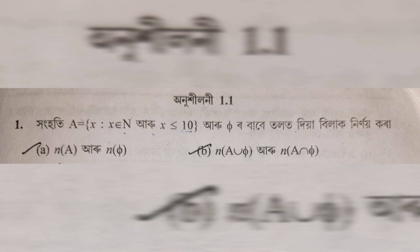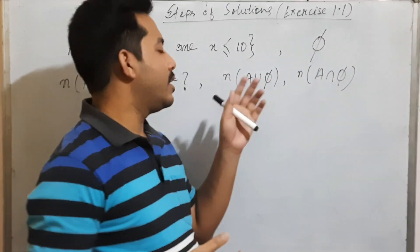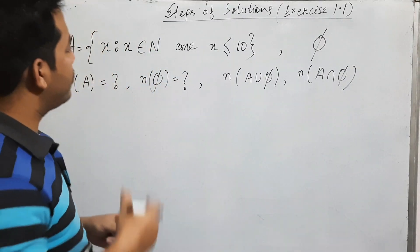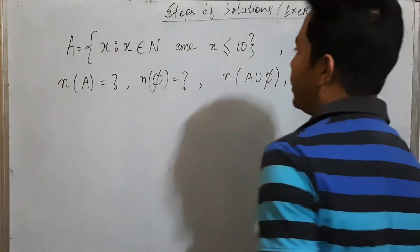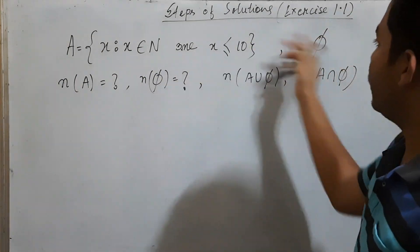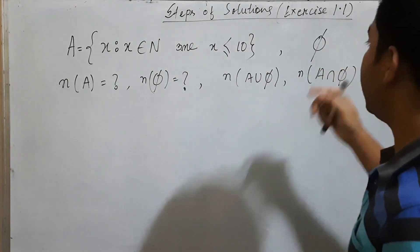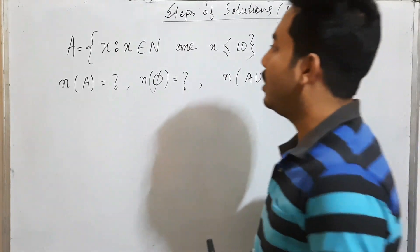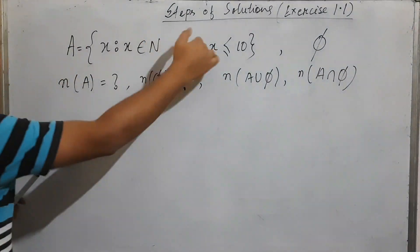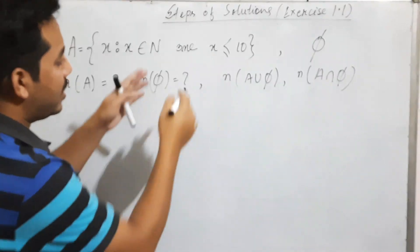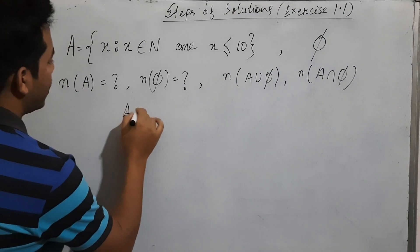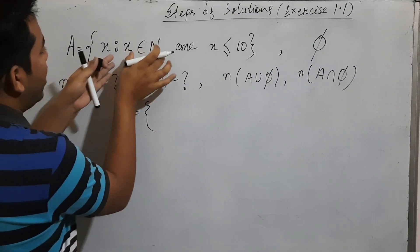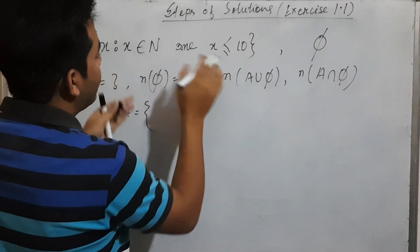First, we will write on the board and then we will get the board. If the board is in the administrative assessment, there are many elements that we need to use. Let's see how we can identify. Here is a formula — another tabular formula. There are two things we can use to write in the first place. This is how we can use the same number of materials.